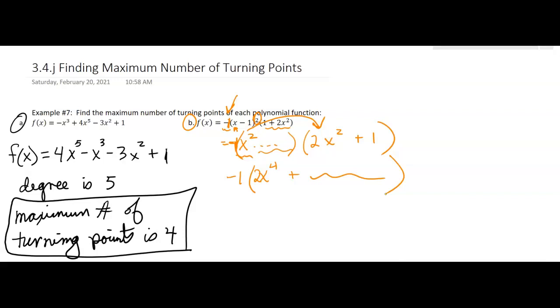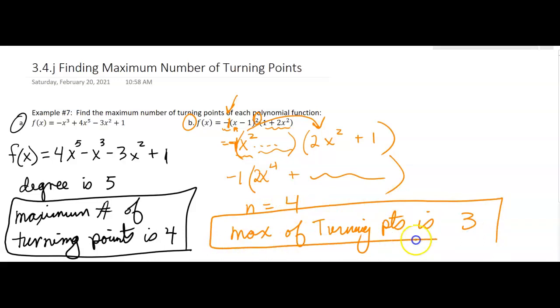Okay, so here the degree is 4. So max number of turning points is 3.